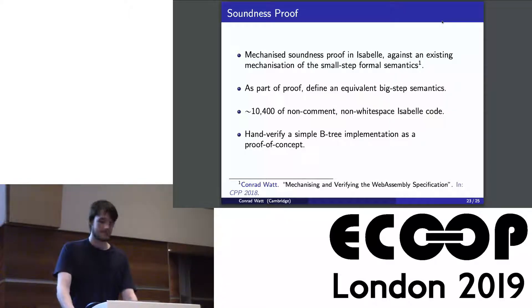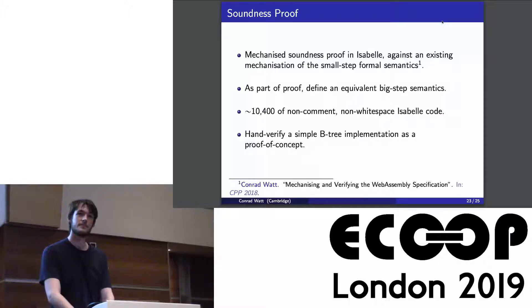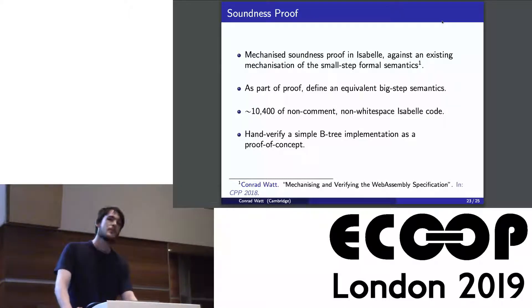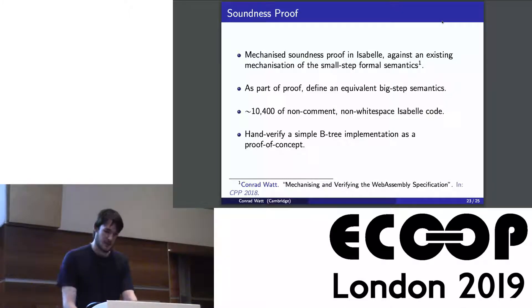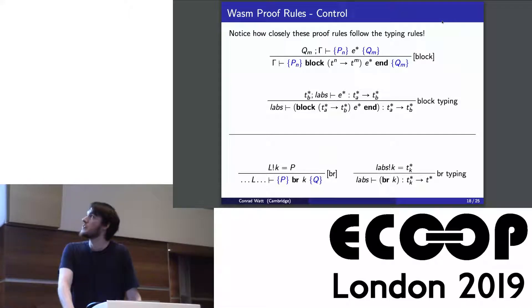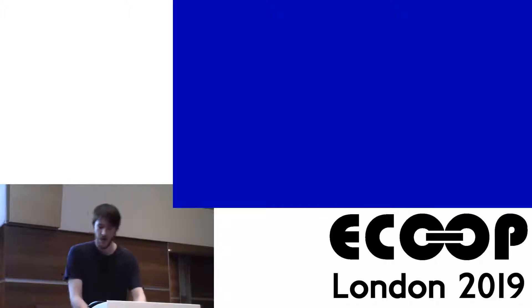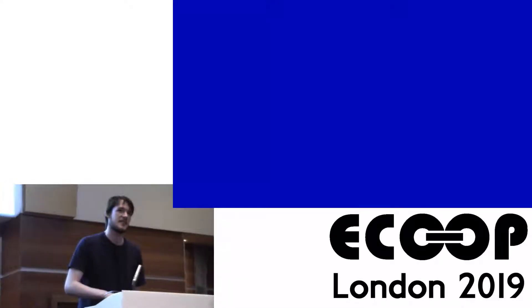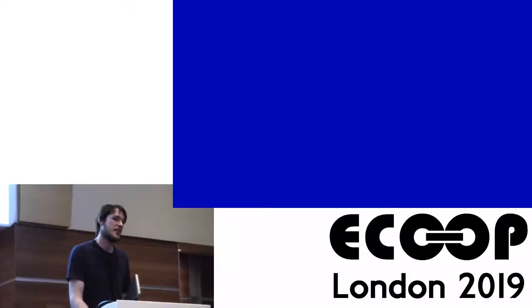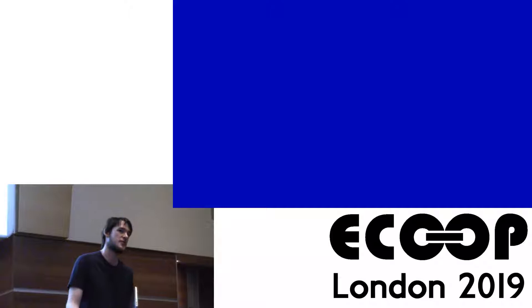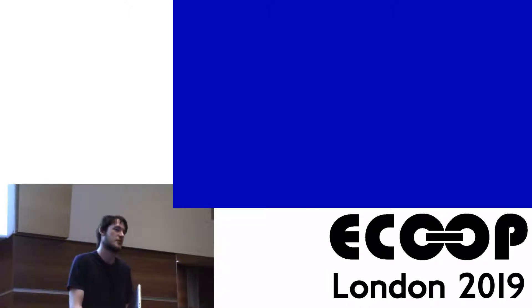Question: Is there anything in your work on WebAssembly that generalizes to other current or future programming languages, high or low level? Answer: The proof rules for loop and block, where you end up manipulating this label context, look like the way you handle continuations in other languages. But looking at related work, there doesn't appear to be a program logic specifically for something with a break-and-continue style while loop — for example, I was surprised there's no Java logic that has this kind of proof rule. So I think there is space to look at other languages and see if a proof rule like this could work in a language that has while loops with break-and-continue. I think it is the right proof rule — I was just surprised not to see existing work using it.